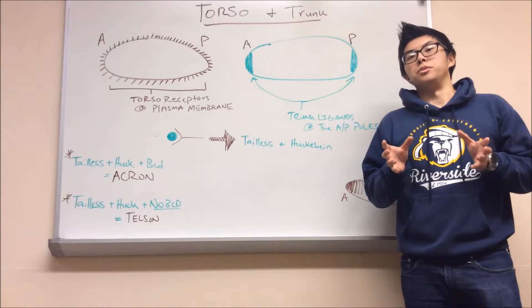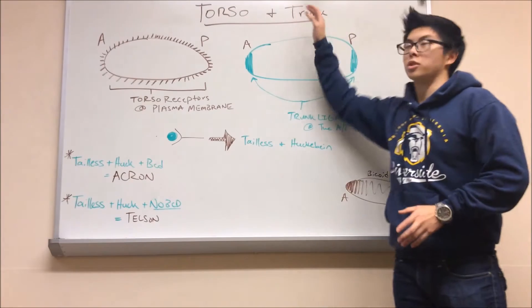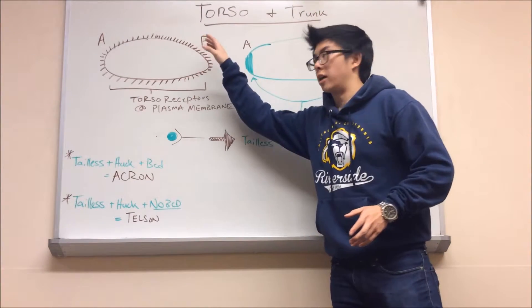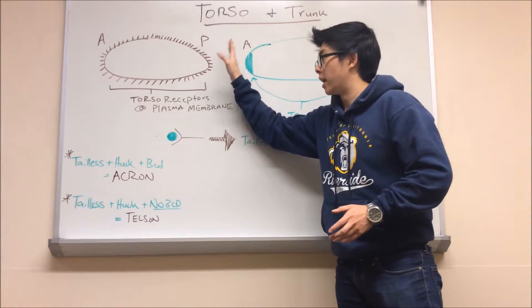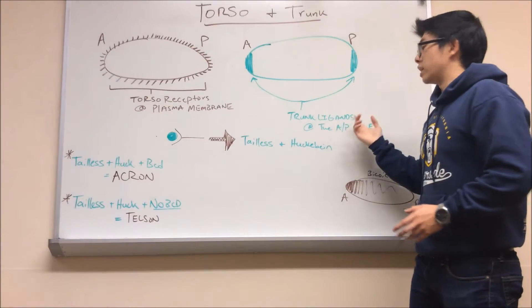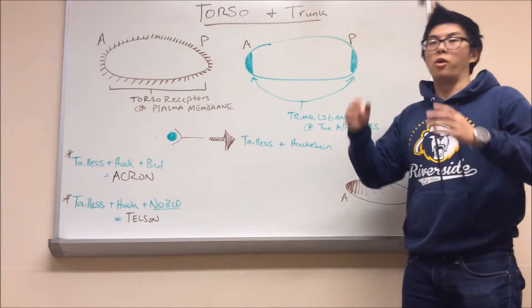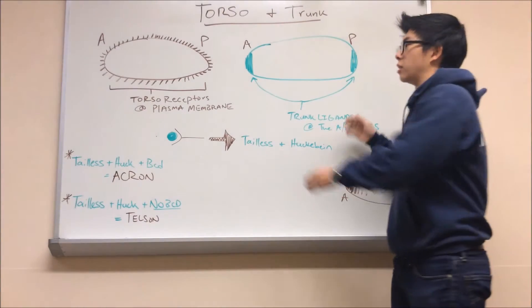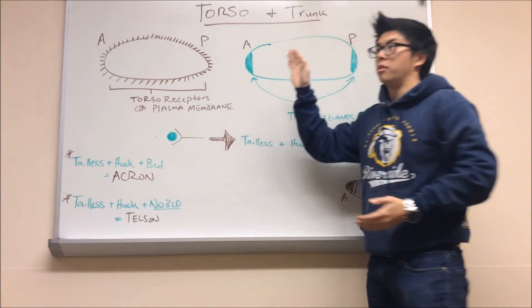So then the last two maternal lethal genes that I'm going to talk about are Torso and Trunk. Torso are these receptors that are expressed throughout the embryo all across the anterior to posterior axis at the plasma membrane. Trunk is a ligand that is only expressed at the poles. So in order for Trunk and Torso receptors to interact with one another, they can only do so at these poles, at these anterior and posterior most ends.